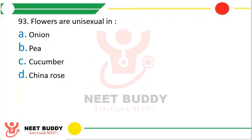Question number 93: Flowers are unisexual in — Option A: Onion. Option B: Pea. Option C: Cucumber. Option D: China rose. Unisexual flowers are found in — the correct answer is option C, cucumber.